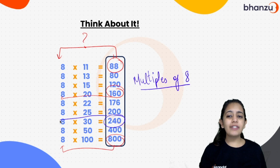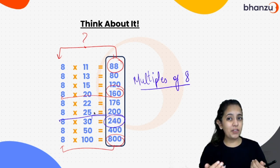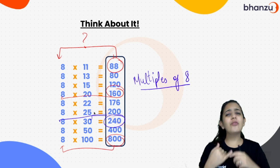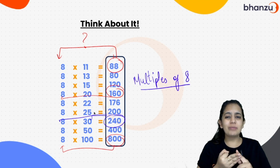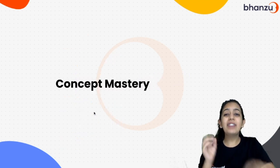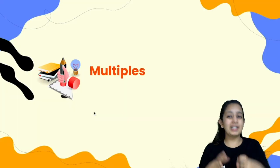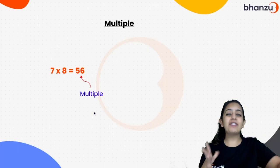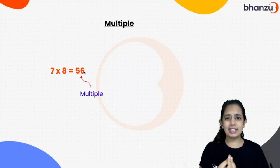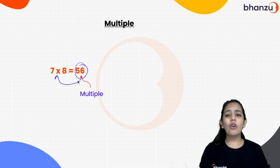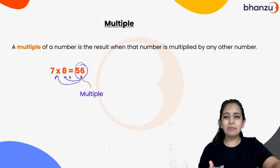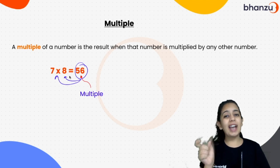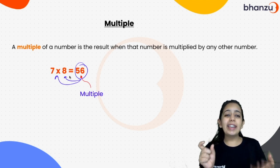So here 240 is a multiple of 8 and is also a multiple of 30. Now, there must be a lot of questions in your mind — like, why are we learning multiples? What is the use in our daily life? And what are the properties of multiples? For that, we have to dive deeper into the concept of multiples. As we know, when you multiply two numbers, we get a result — and that product is the multiple of both of them. So now, can you define what a multiple is? The multiple of a number is the result when that number is multiplied by any other number.